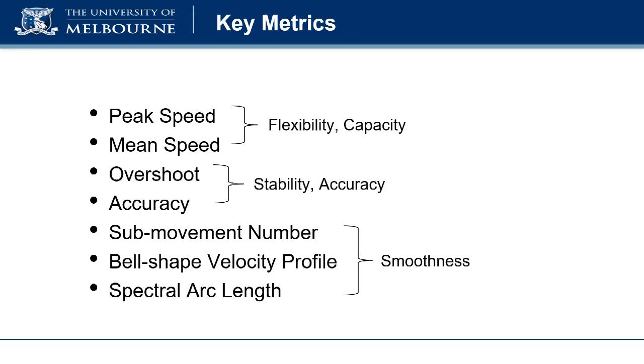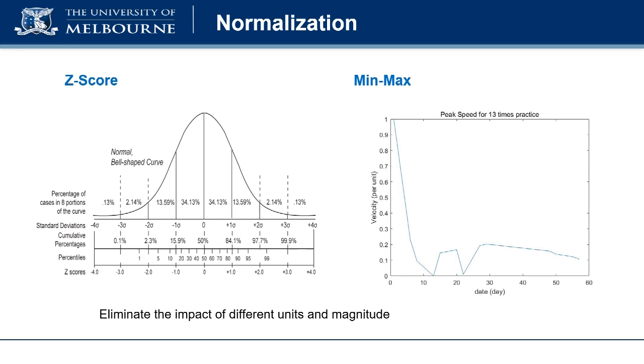These features have different units and magnitudes. If we want to use machine learning to cluster our features, we need to do normalization first. As a result, all features will be scaled in the same range.